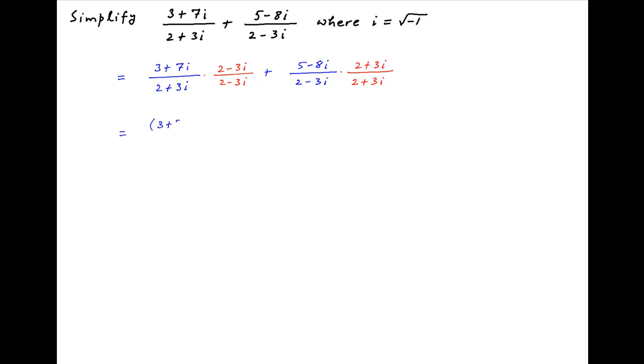Therefore, the given expression is equal to 3 plus 7i times 2 minus 3i plus 5 minus 8i times 2 plus 3i divided by 2 plus 3i times 2 minus 3i. This is equal to 6 minus 9i plus 14i minus 21i square plus 10 plus 15i minus 16i minus 24i square divided by 4 minus 9i square.